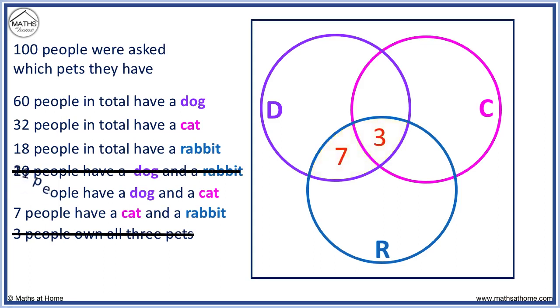21 people have a dog and a cat. We have 3 and need 18 more to make 21.